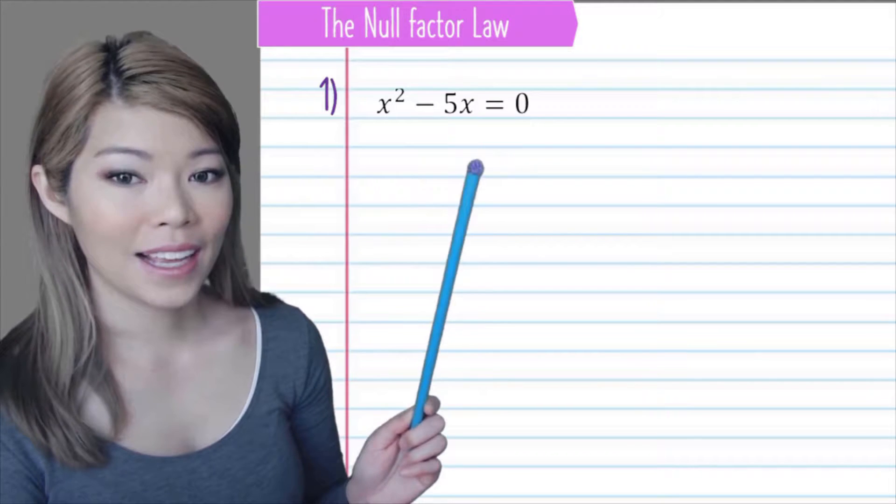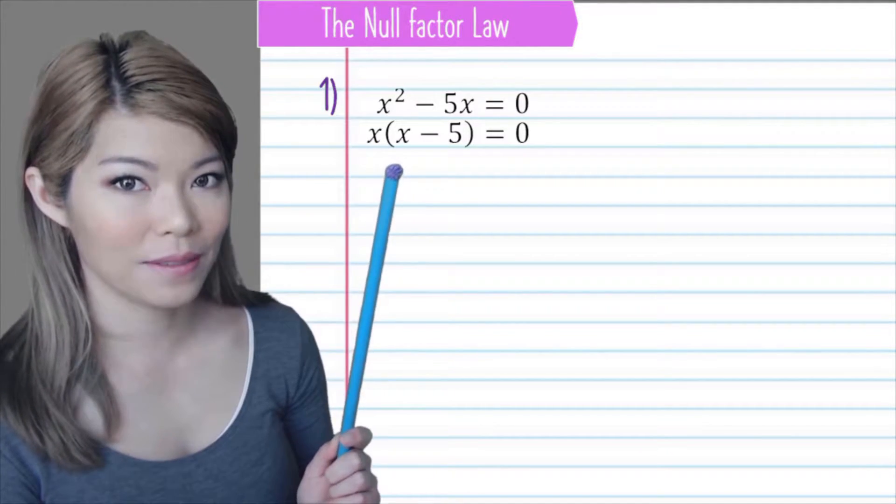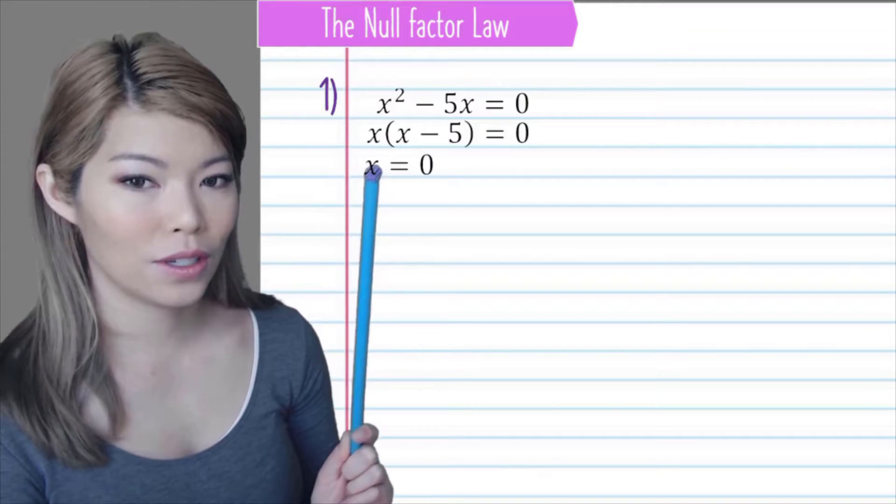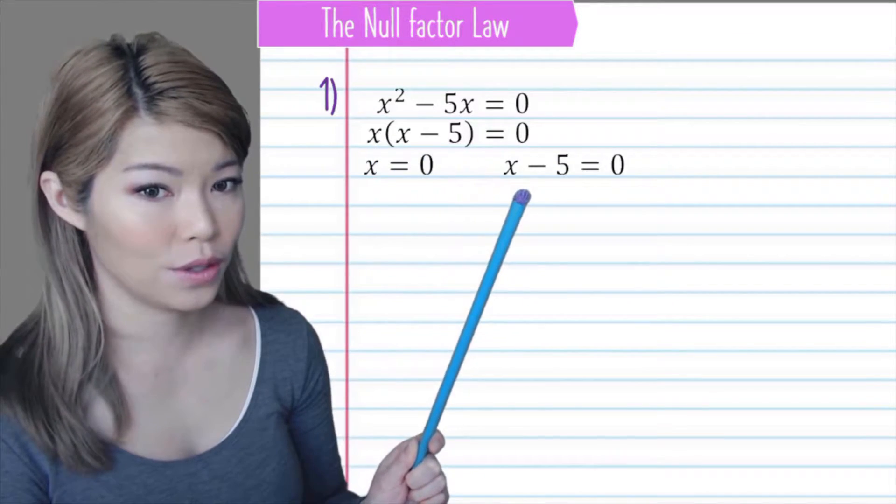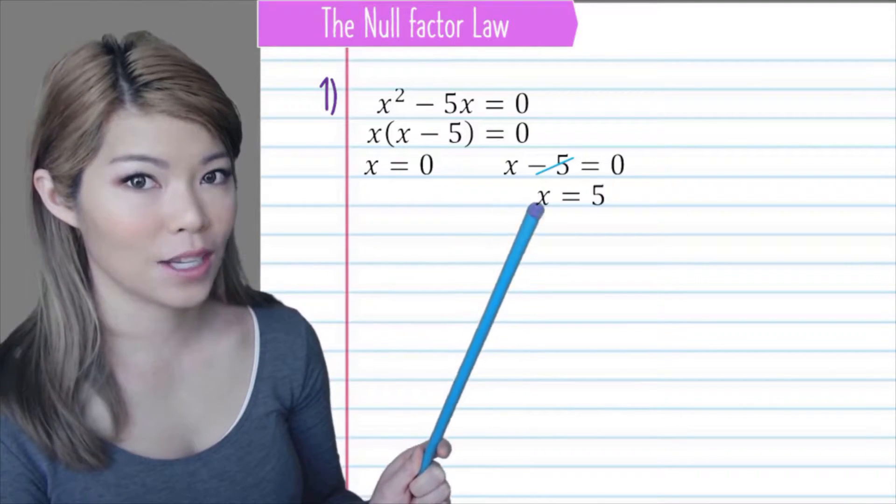Here we have x squared minus 5x. Again, what we can do is to factorise, take the x out, and now x is equal to 0 and x minus 5 is equal to 0. Bring the 5 over to the other side, and we have x is equal to 5.